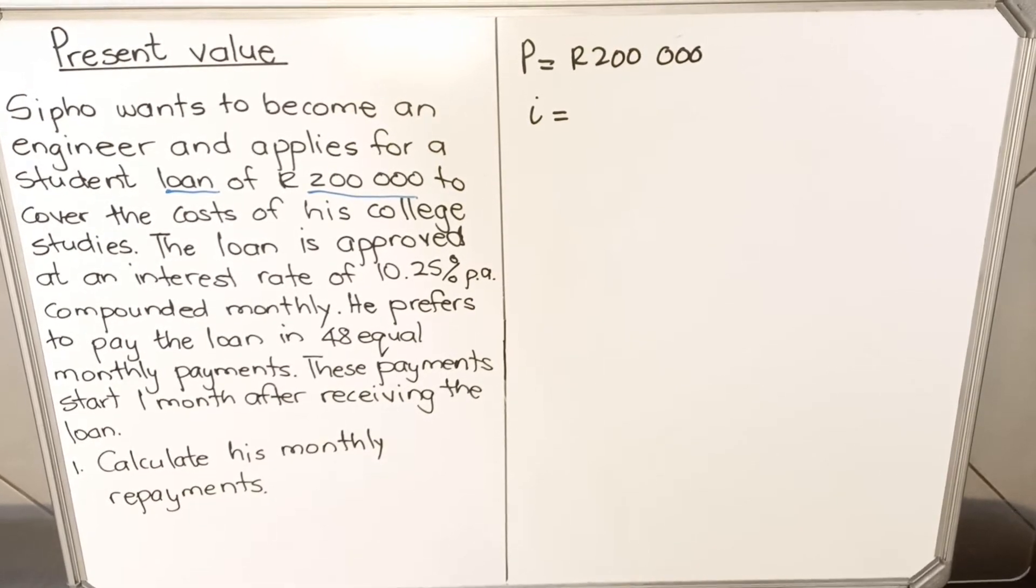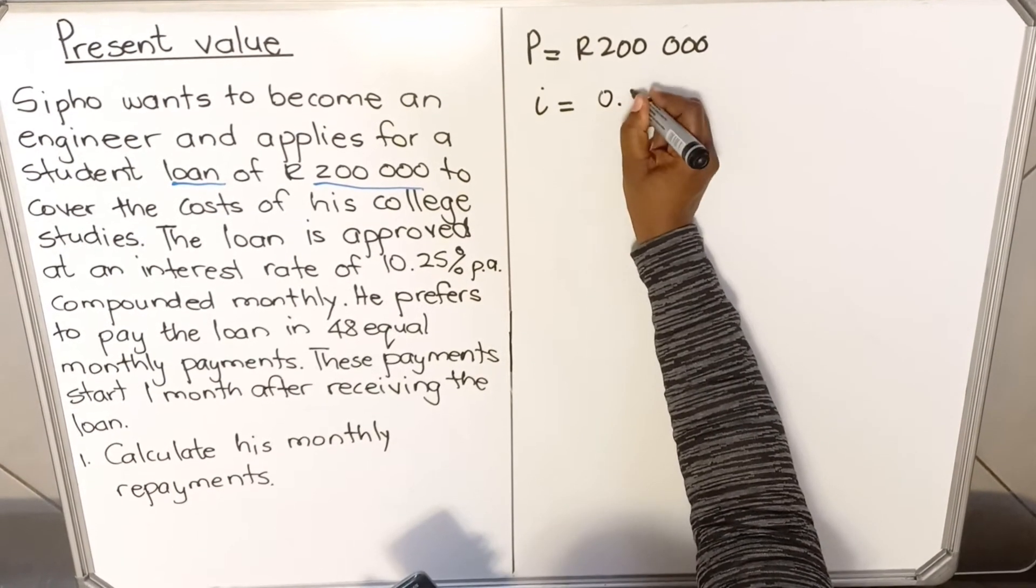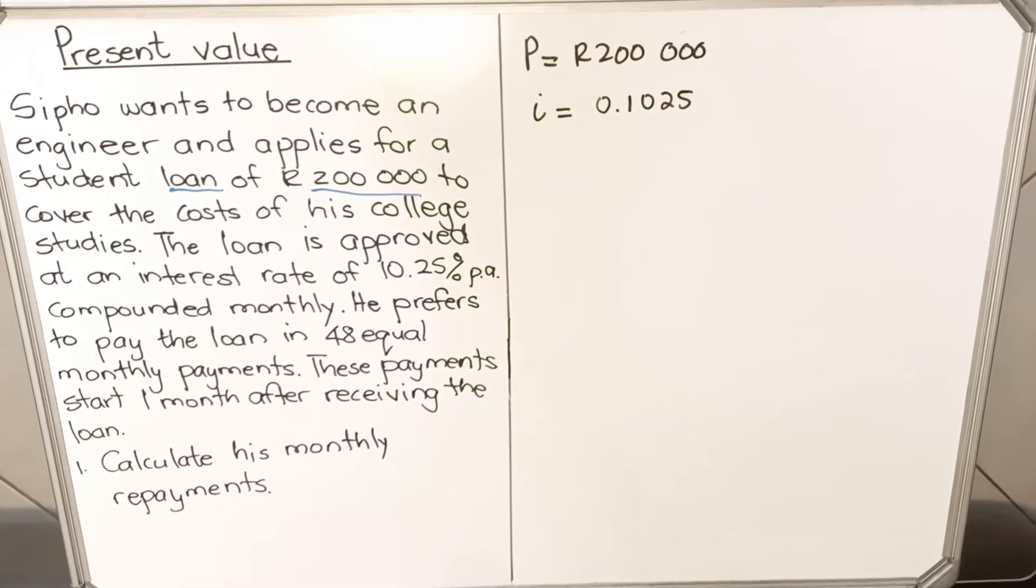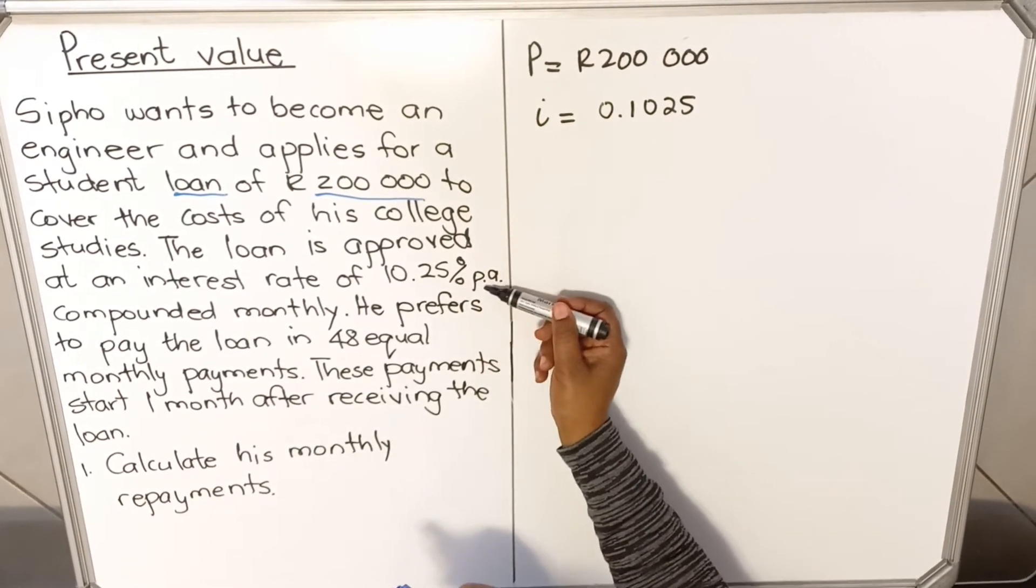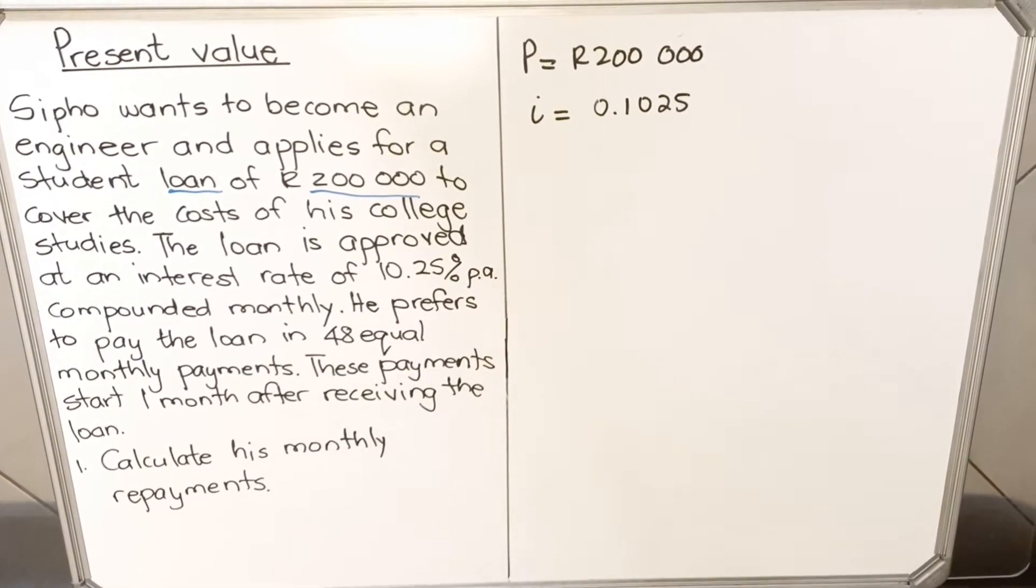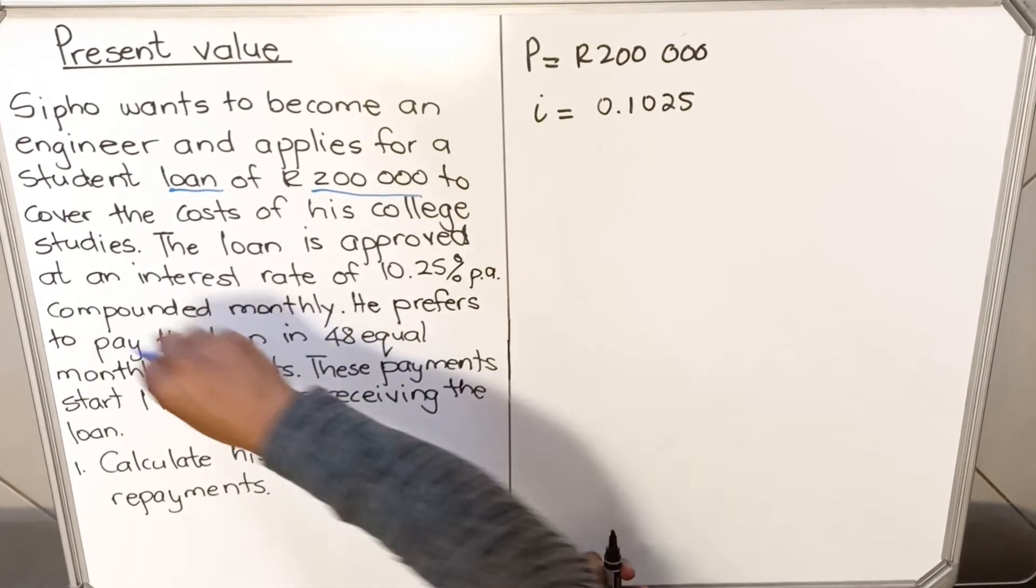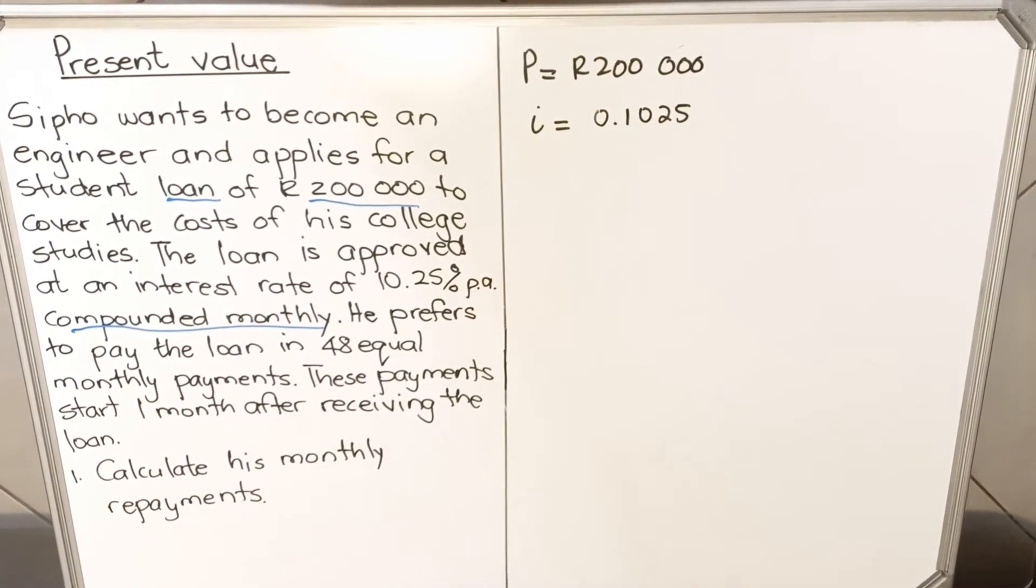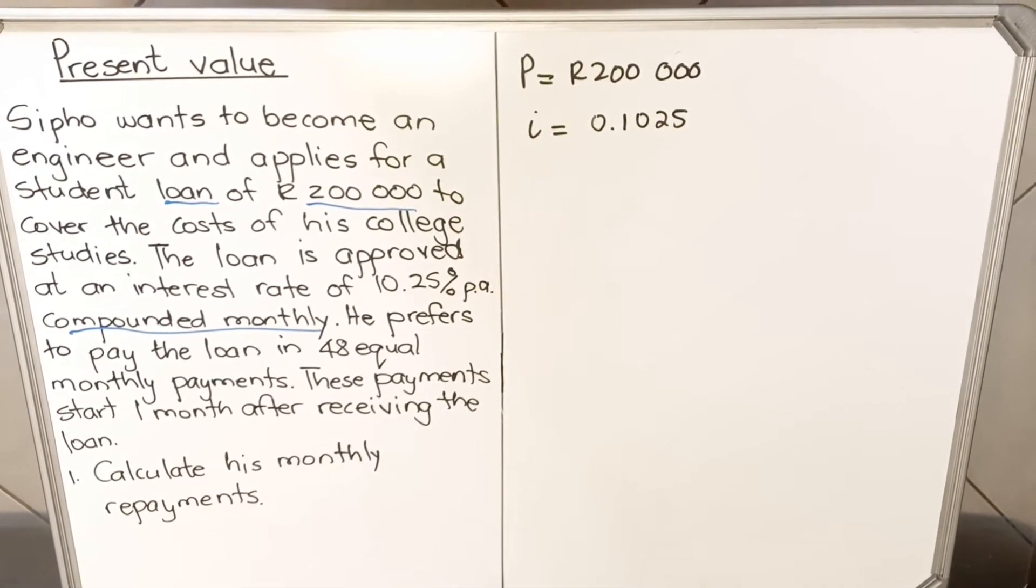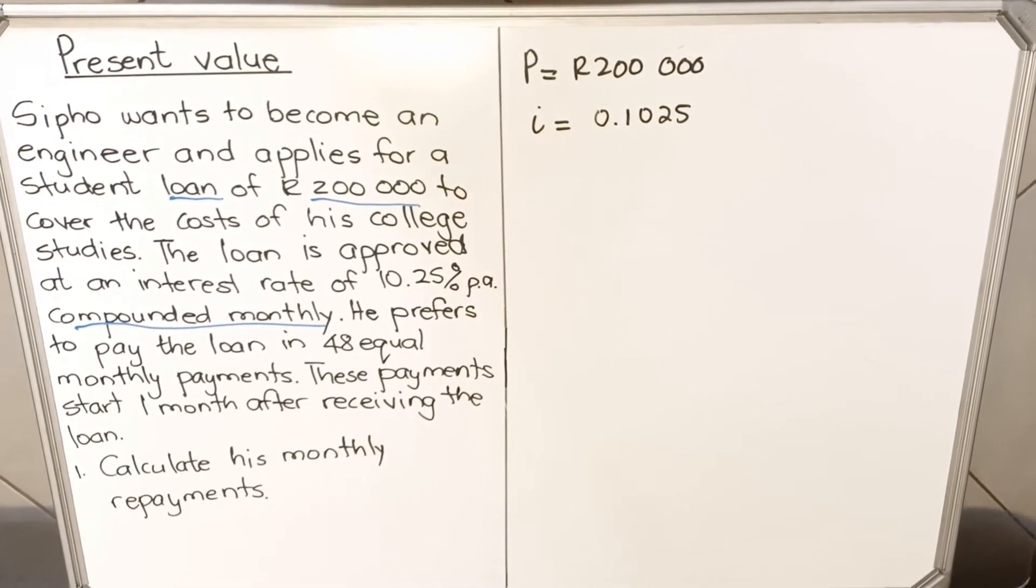10.25 per hundred, divide by 100. Don't write the percentage in percentage form. So it's 0.1025, you always write it as a decimal. In your formula you use it as a decimal. This is the percentage per annum. Then they say compounded monthly. Compounded monthly, what does it mean? It means every month he's going to pay a portion of this. Compounded monthly, he's going to pay a portion of this 10.25%. It doesn't mean every month he's going to pay 10.25%. No, they're going to take the 10.25 and divide it into months.